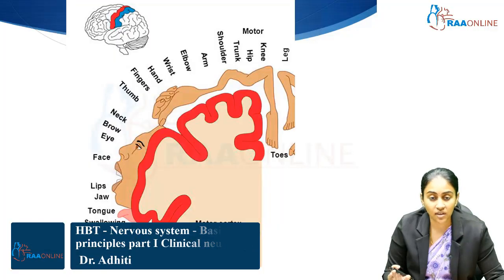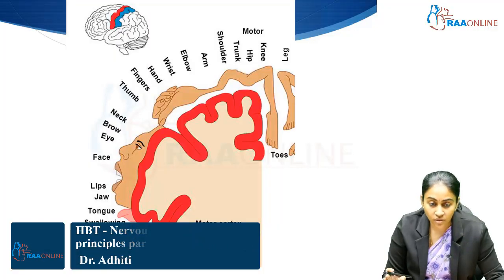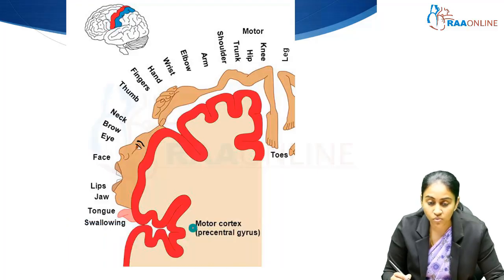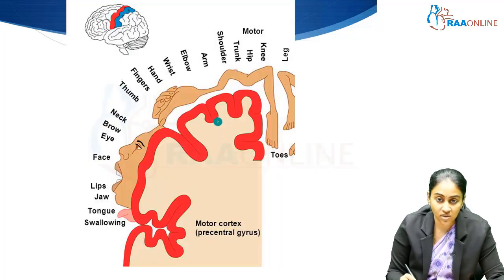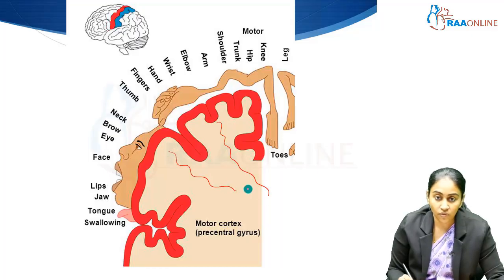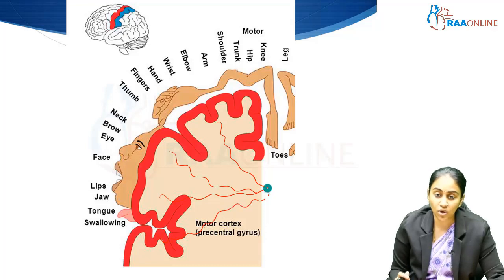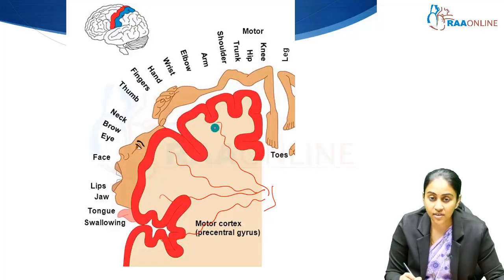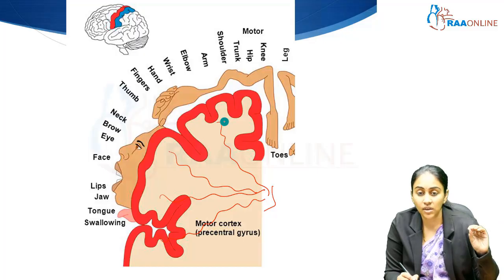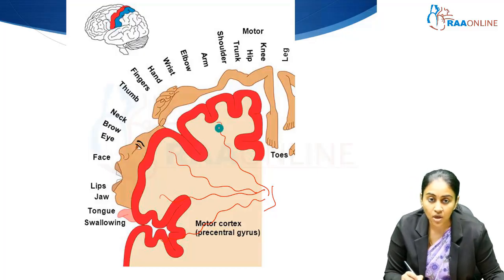This is the motor homunculus. As we are able to see, this is the motor cortex which is situated in the precentral gyrus — this is where the story begins. This motor cortex, situated in the precentral gyrus in the frontal lobe, is the site of origin of the motor pathway. The corticospinal tract originates from this place. There are specific sites in the precentral gyrus in the motor cortex which are responsible for the motor outputs of the various parts of our body.